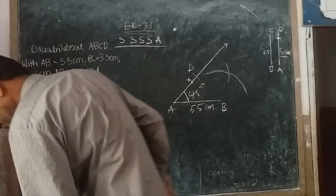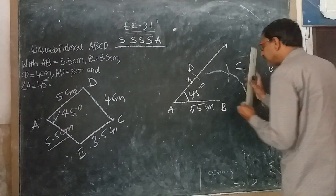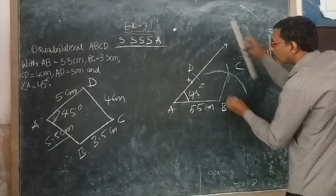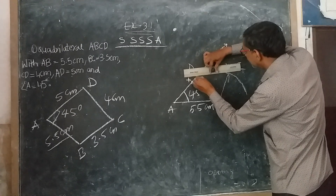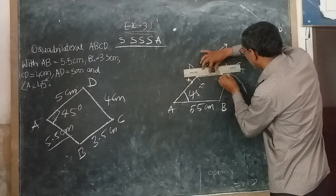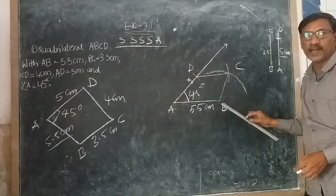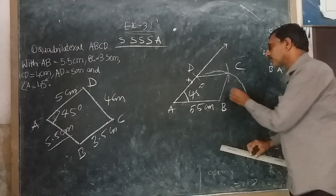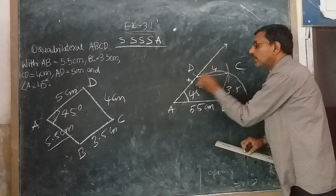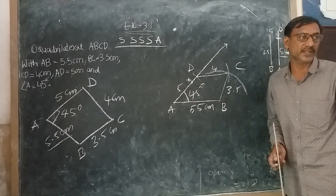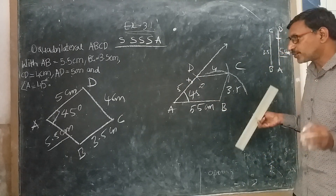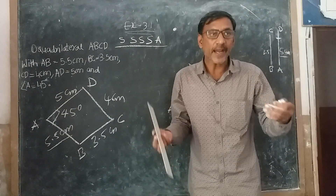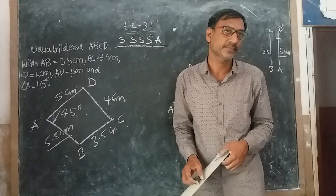Now I take C here. By joining D and C, we will get the complete quadrilateral ABCD with measurements: AB = 5.5 cm, BC = 3.5 cm, CD = 4 cm, AD = 5 cm. This is the way to construct the quadrilateral ABCD.